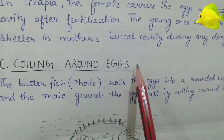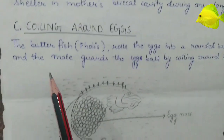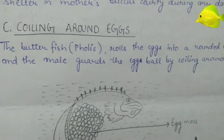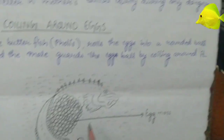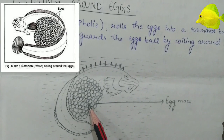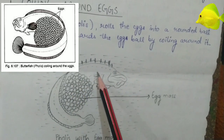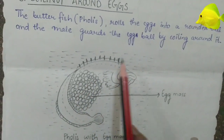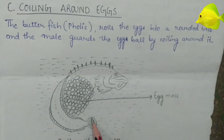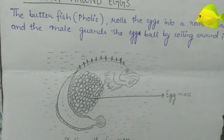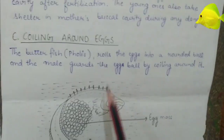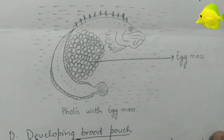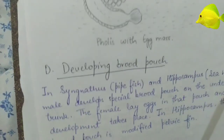The third type of parental care is coiling around eggs. Here we have the butterfish, also known as Pholis. The male fish guards the eggs by coiling around the rounded egg mass or egg ball. This is the care shown by the male butterfish, also known as Pholis.